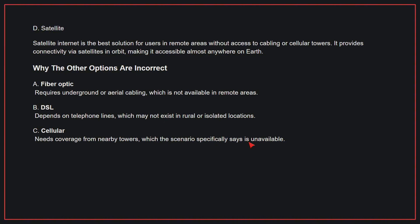Why the other options are incorrect: A, fiber optic — this requires underground or aerial cabling, which is not available in remote areas. B, DSL — this depends on telephone lines, which may not exist in rural or isolated locations. C, cellular — this needs coverage from nearby towers, which the scenario specifically says is unavailable. Therefore, the correct answer is D.